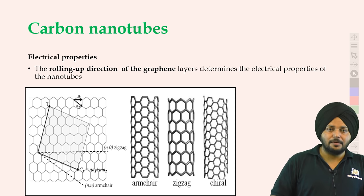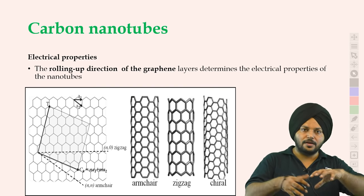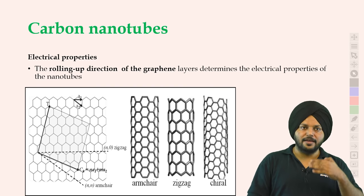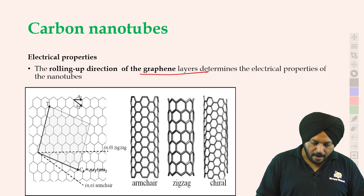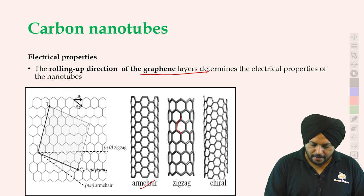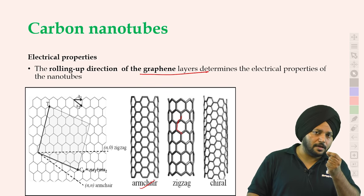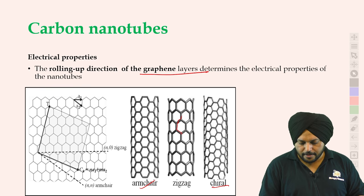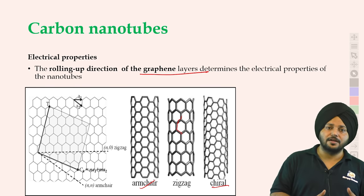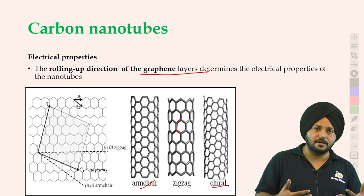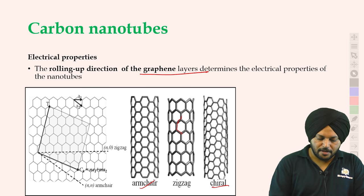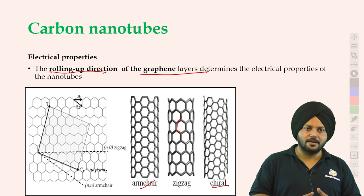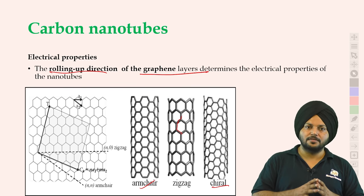UPSC आपसे statement पूछ सकता है। Carbon nanotube की जो direction/angle है — उसको change करें तो इसकी properties भी change होती हैं। जैसे armchair है, zigzag है — थोड़ा-थोड़ा फर्क है, बहुत ज़्यादा फर्क नहीं, क्योंकि बहुत ही nano scale पर यह काम होता है। बस इतना याद रखना है कि अगर इसकी direction/angle change करें तो properties भी change होती हैं।